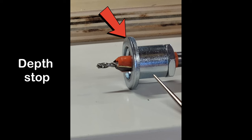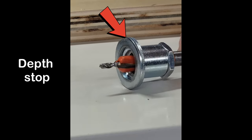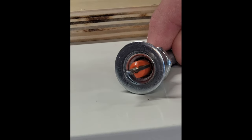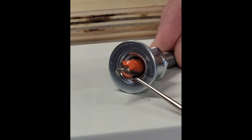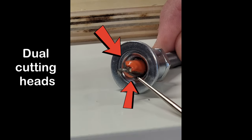The washer depth stop allows you to do at different heights and that bends to keep from marring up the surface. Now, it does have two cutter heads on here which I really like and it gives a super clean cut.